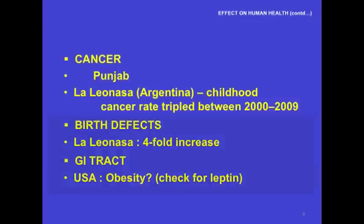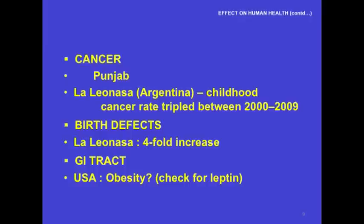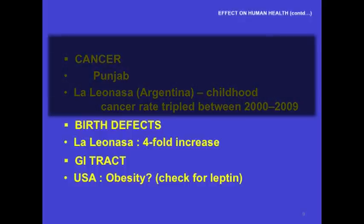In Punjab, there is a very high incidence of cancer. There are cancer trains going from small places to larger cities in Punjab in districts where BT cotton—genetically modified cotton—has been used. In one district of Argentina, La Nasa, the childhood cancer rate tripled between 2000 and 2009—the period during which they have used GM corn, GM soya, and GM rice. Again in La Nasa, there is a fourfold increase in birth defects during this period of extensive use of GM food.